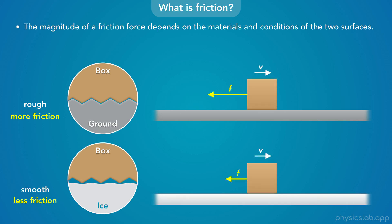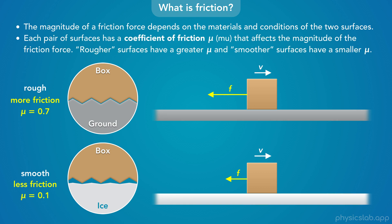But describing surfaces as rough or smooth isn't very precise. We need a way to quantify how rough a surface is so we can calculate the friction forces. Luckily, there's something called the coefficient of friction. Each pair of surfaces has a coefficient of friction, represented with the Greek letter mu, that affects the magnitude of the friction force. Rougher surfaces have a greater coefficient of friction, and smoother surfaces have a smaller coefficient of friction. So for the box and the ground, the coefficient of friction might be 0.7, and for the box and the ice, it might be much smaller, like 0.1. The coefficient of friction is just a number — it doesn't have a unit. It's usually between 0 and 1, and a bigger number means there's more friction between the two surfaces.